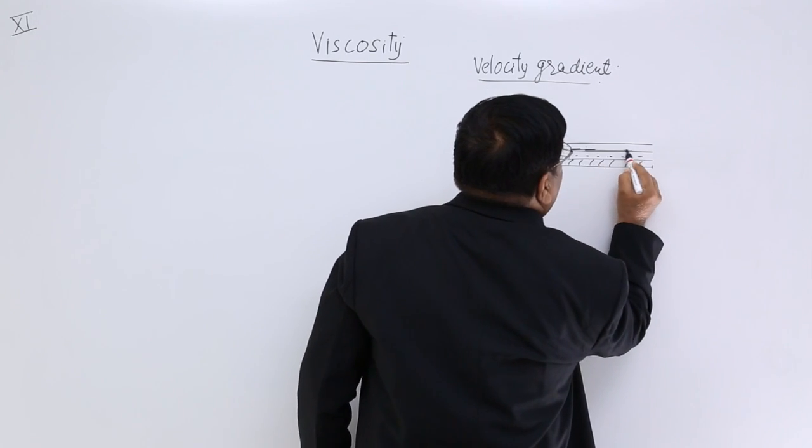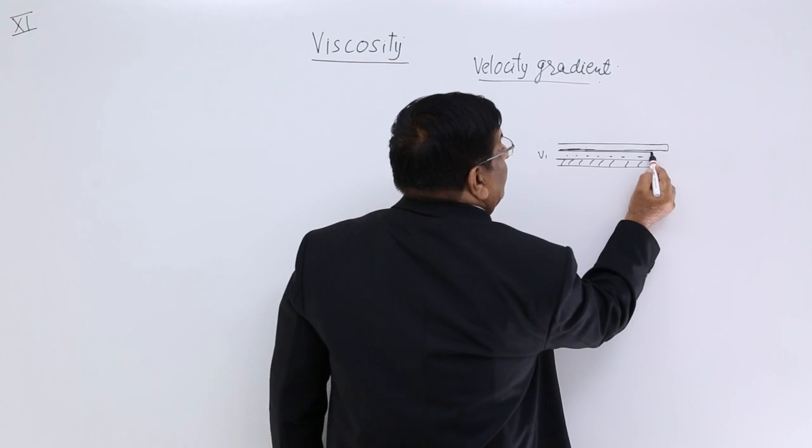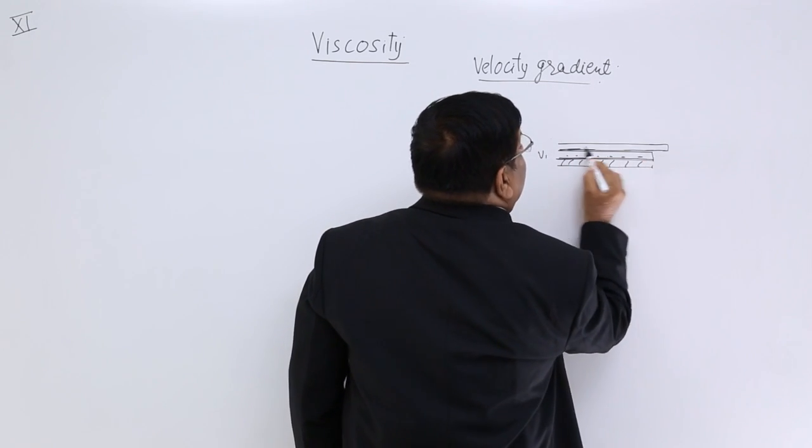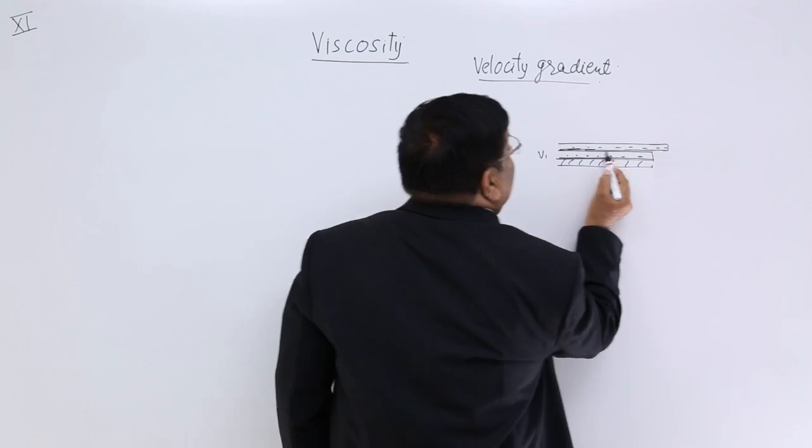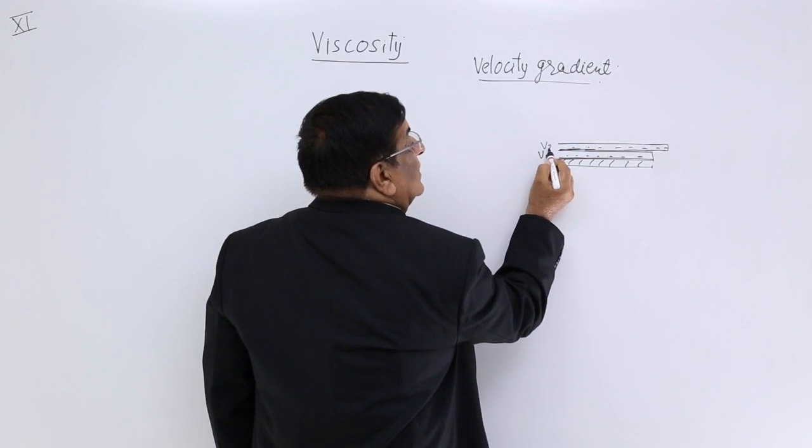These are moving. This layer is slightly more than this. This way, this layer is here, and this layer moves forward. And its velocity is V1 plus V2.